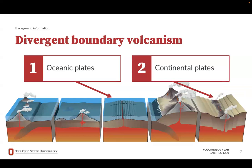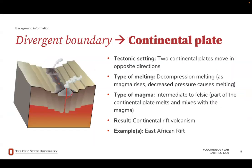The next tectonic setting that can generate volcanism is divergent boundaries. Divergent boundaries occur when two plates move apart from each other in opposite directions. We have two subtypes: the divergence of two oceanic plates, and the divergence of continental plates. Divergent boundaries between continental plates cause crustal thinning. As the crust thins and mantle material rises due to convection currents in the mantle, the mantle material begins to melt and form magma. This process is known as decompression melting. Eventually, the crust becomes so thin that magma can break through the surface, creating a series of volcanoes. Because part of the continental plate will melt and mix with the mafic magma from the mantle, the magma in these settings tends to be intermediate to felsic in composition. An example of this is the East African Rift.